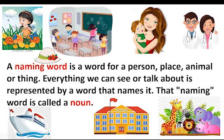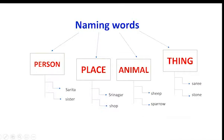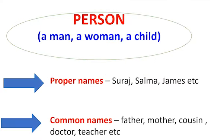When I say person, it means it can be names of people like Suraj, Salma, James etc., and the relations like mother, father, cousin, helpers like doctor, teacher, driver etc.